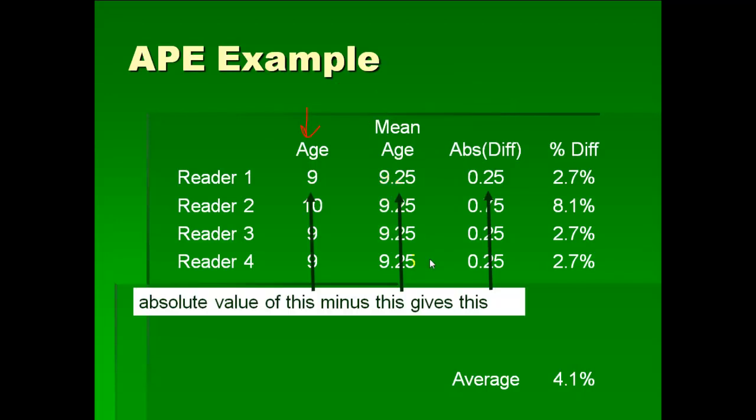Now the third column, or the fourth column, third column of numbers, is the absolute value of the difference between the age and the mean age. So this is how far is each individual off from the average, and it's just the absolute value. So you can see how if there's a lot more variability here, then each reader is going to be farther from the average, and the absolute value of the difference is going to be higher. But in this particular example, you see that we have good precision. Each reader is very close to the average, so the difference is very small.